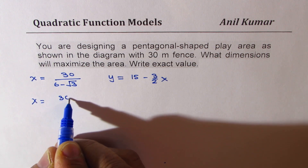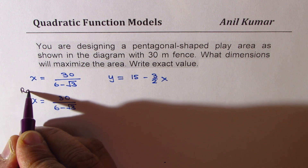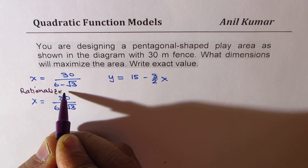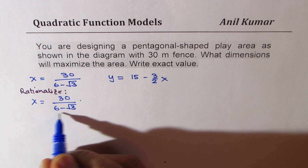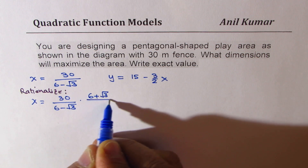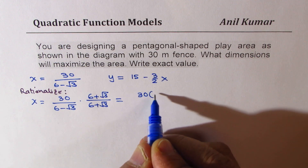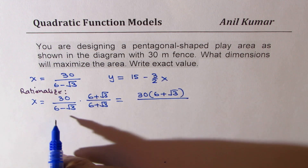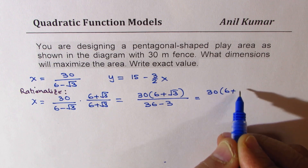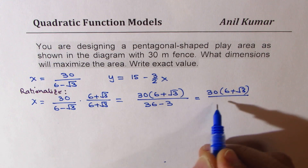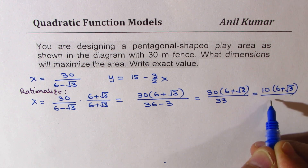Rationalizing x = 30/(6 − √3): multiply and divide by the conjugate (6 + √3). This gives 30·(6 + √3) / (36 − 3) = 30·(6 + √3) / 33. Dividing both numerator and denominator by 3: x = 10·(6 + √3) / 11. This is an important step — in multiple choice questions, this rationalized form may be the listed answer.